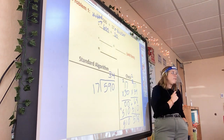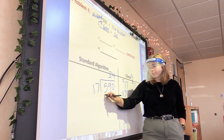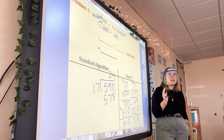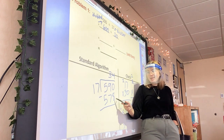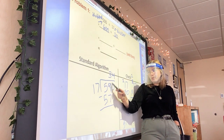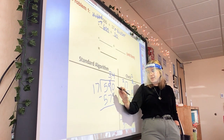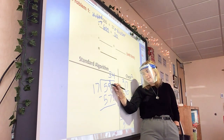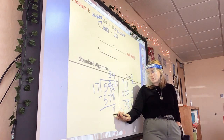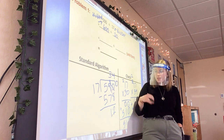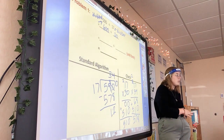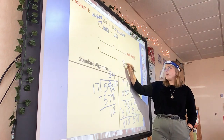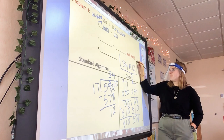17 goes into 590 34 times. What was 17 times 34? 578. I just multiplied — what's my next step? Subtract. Can I take 8 away from 0? No — I've got to borrow. I take 1 away from the 9, giving me 8 in the tens place. That 1 explodes into 10, adds to what I already have. 10 minus 8 is 2, 8 minus 7 is 1, 5 minus 5 is 0. Do I have anything else to bring down? No. Can 17 go into 12 at all? No. So my answer is 34 remainder 12.